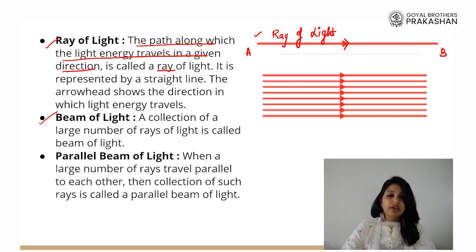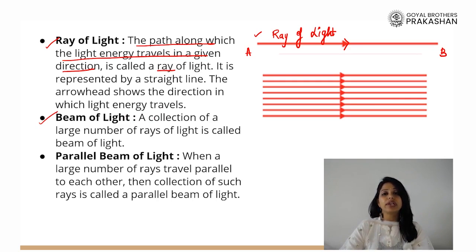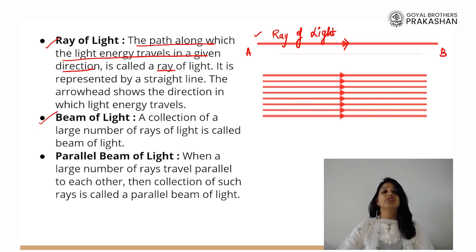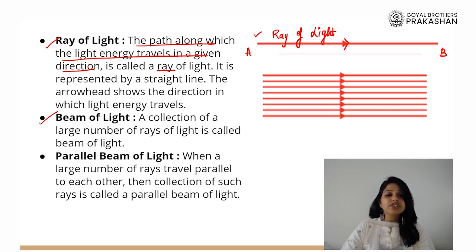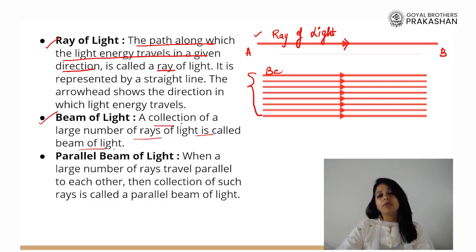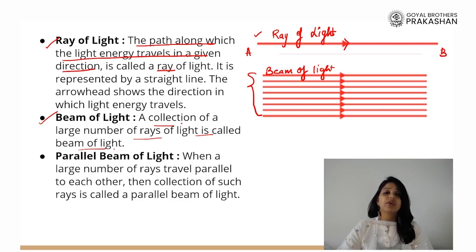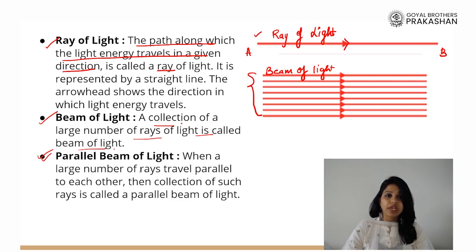The next point is beam of light. When light comes from a source such as an electric bulb, torch, or tube, it is not coming in only one ray — there are a lot of rays coming together. So we talk about a beam of light. A collection of a large number of rays of light is called a beam of light. When we talk about a parallel beam, a large number of rays are traveling parallel to each other. So a large number of rays traveling parallel to each other is ideally a parallel beam.